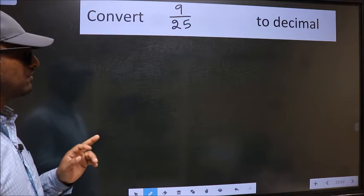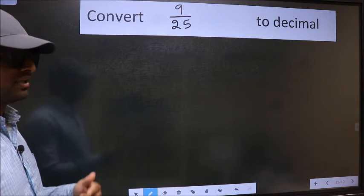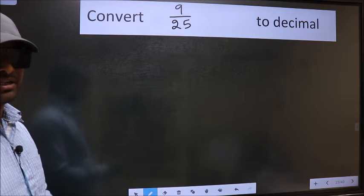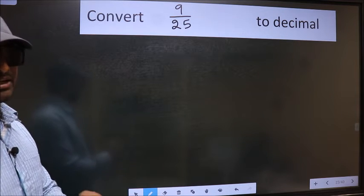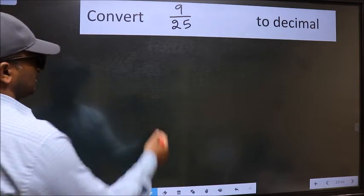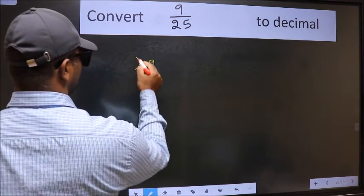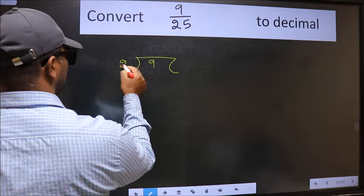Convert 9 by 25 to decimal. To convert to decimal, we should divide it. To divide, we should frame it in this way: 9 here and 25 here.